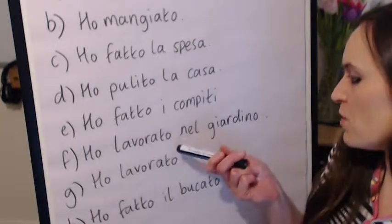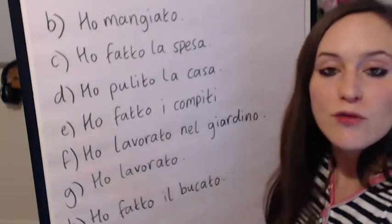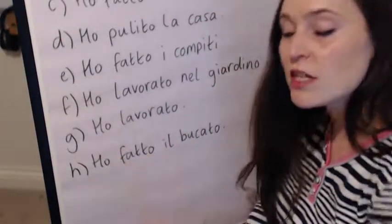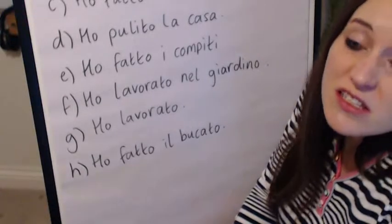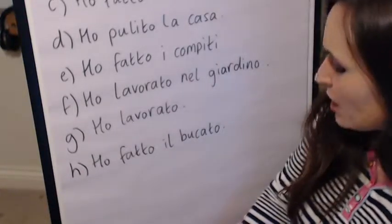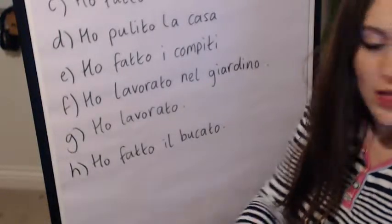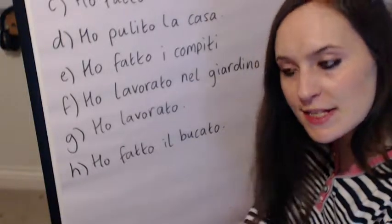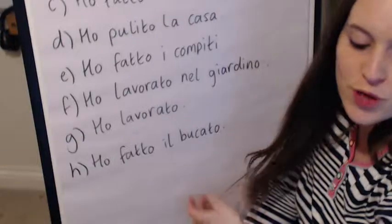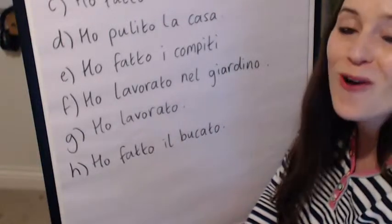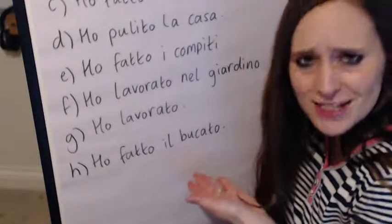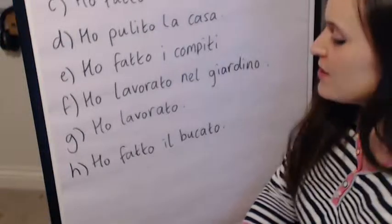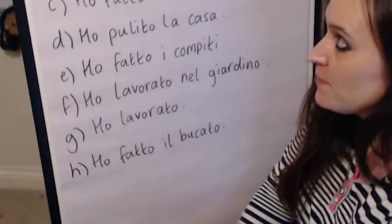We've had lavorato nel giardino. Here we just have ho lavorato — I worked. Generic work, could be in the garden, could be in your office, could be fixing something. Ho fatto il bucato. Normally bucato means perforated or something with holes in it — not quite sure where this comes from — but il bucato is the laundry, the washing. So I did the washing or the laundry.